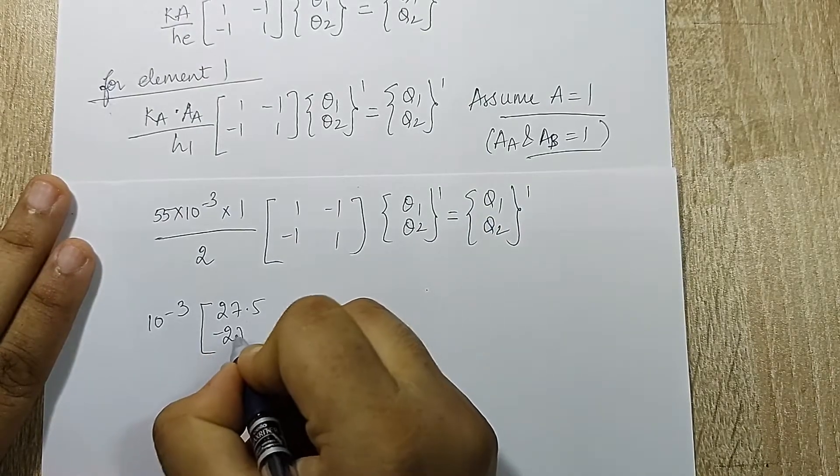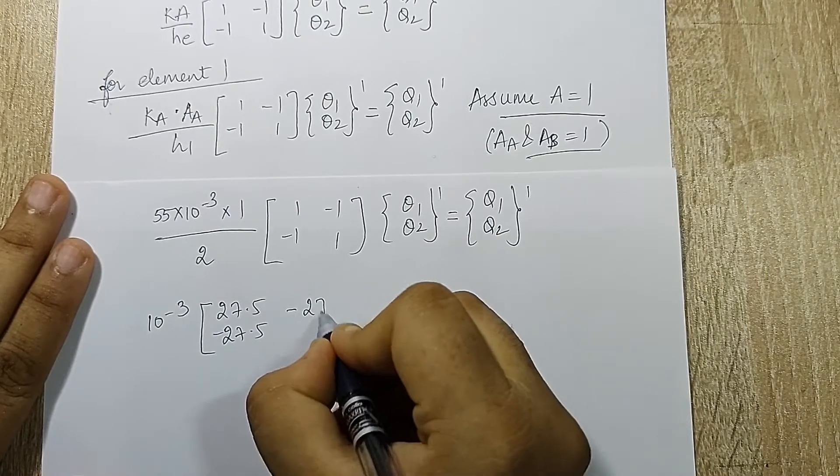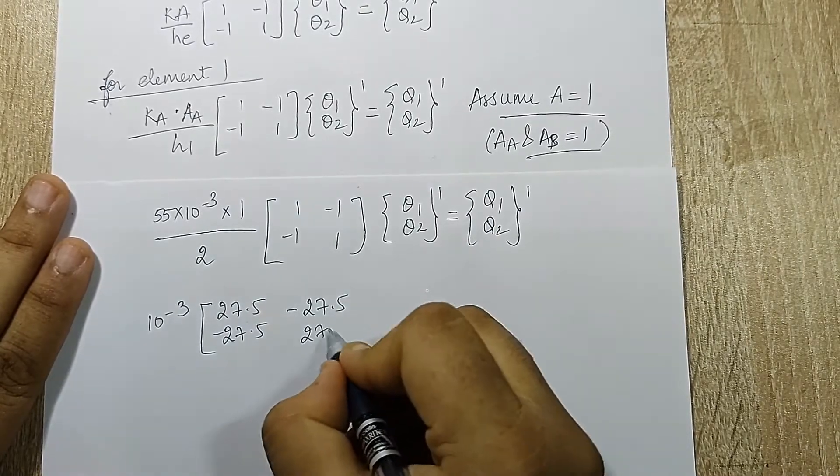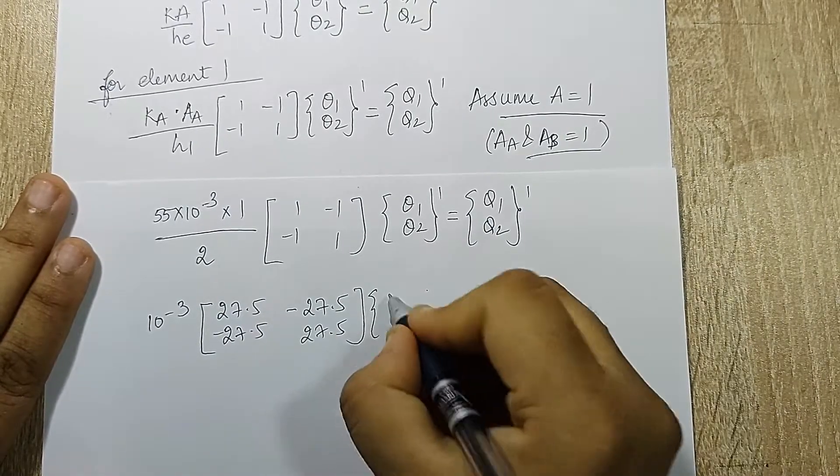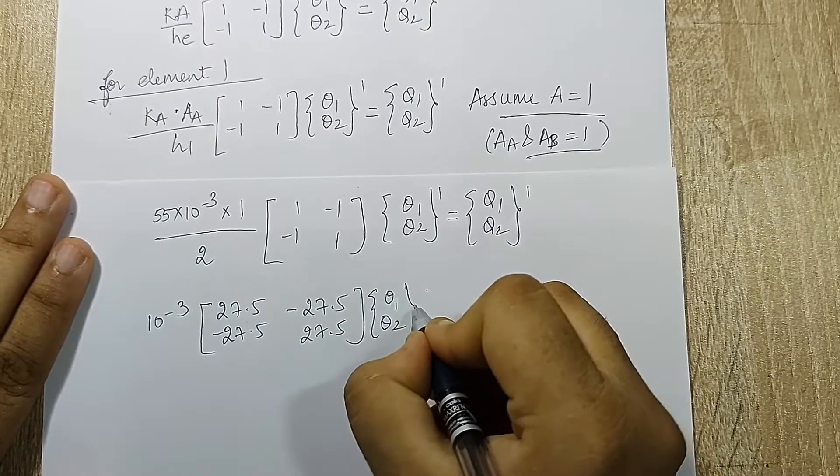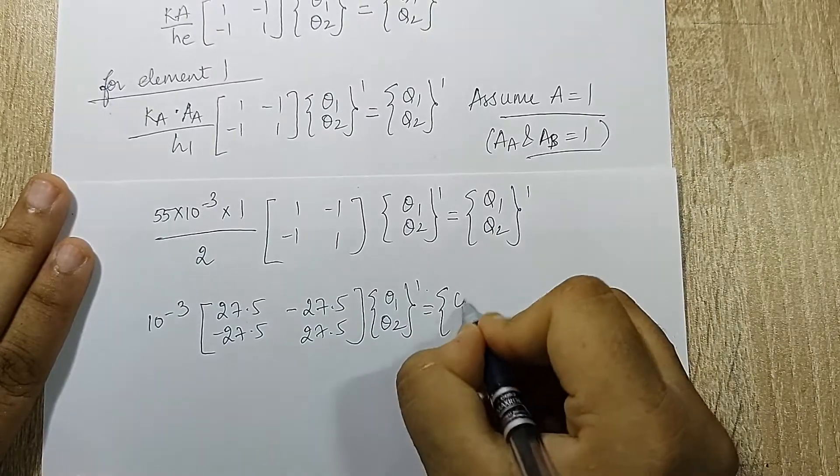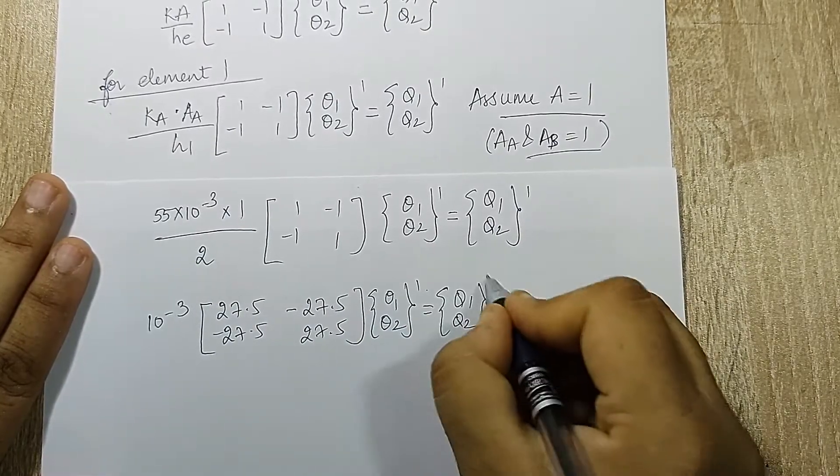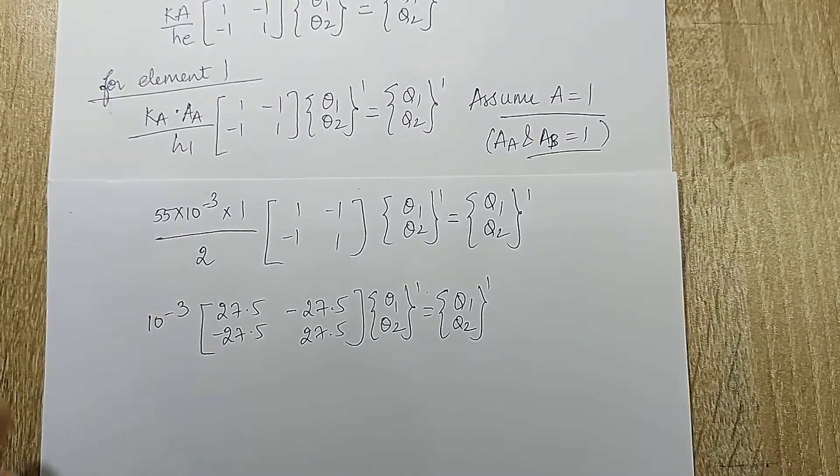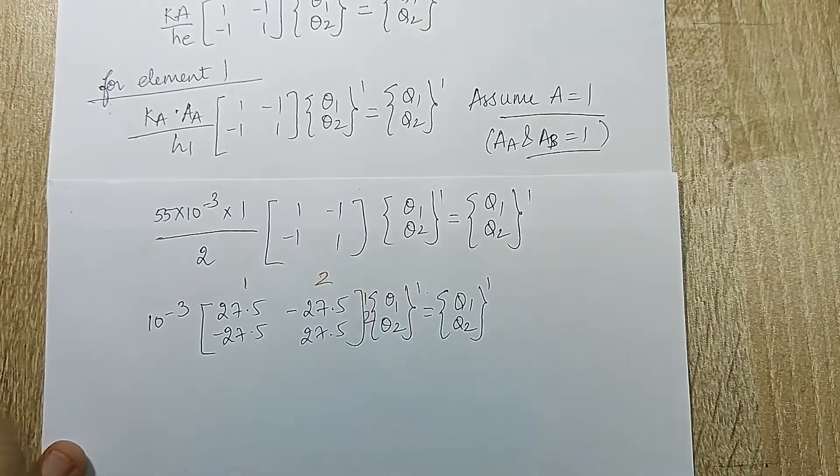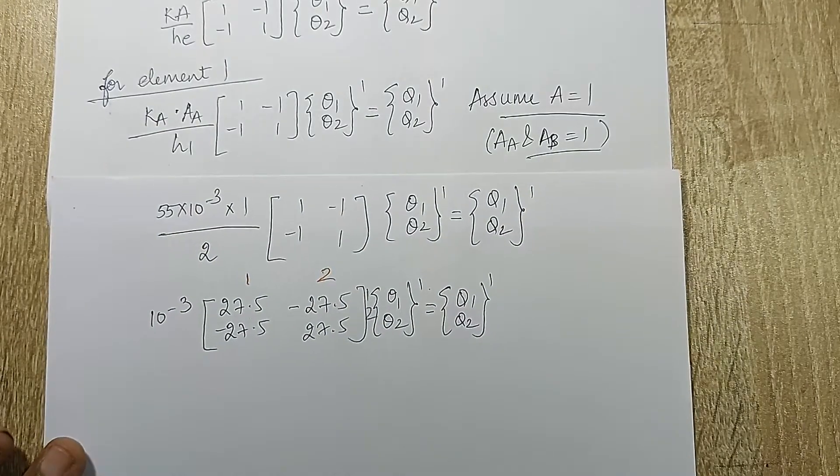27.5 is the multiplying number. Now my element 1 is between node 1-2 which I will mark here.